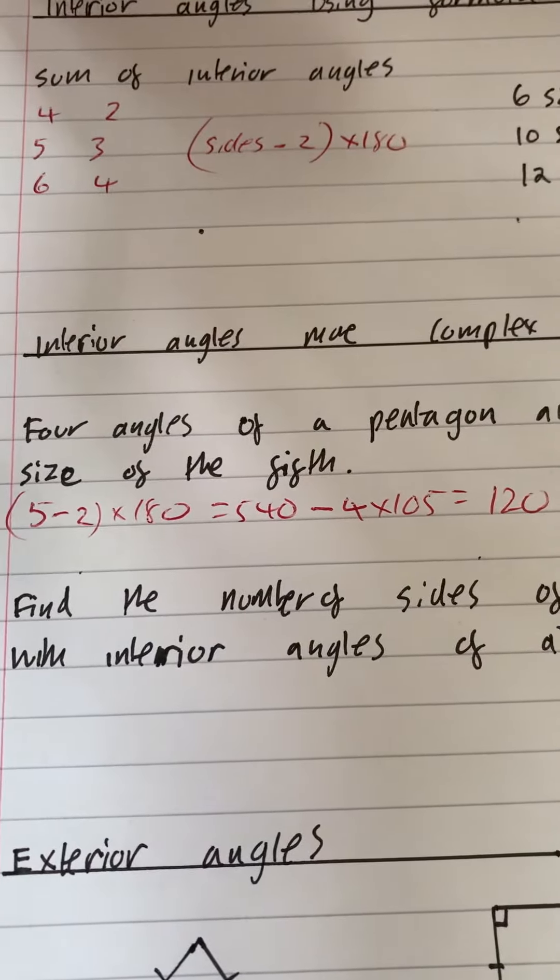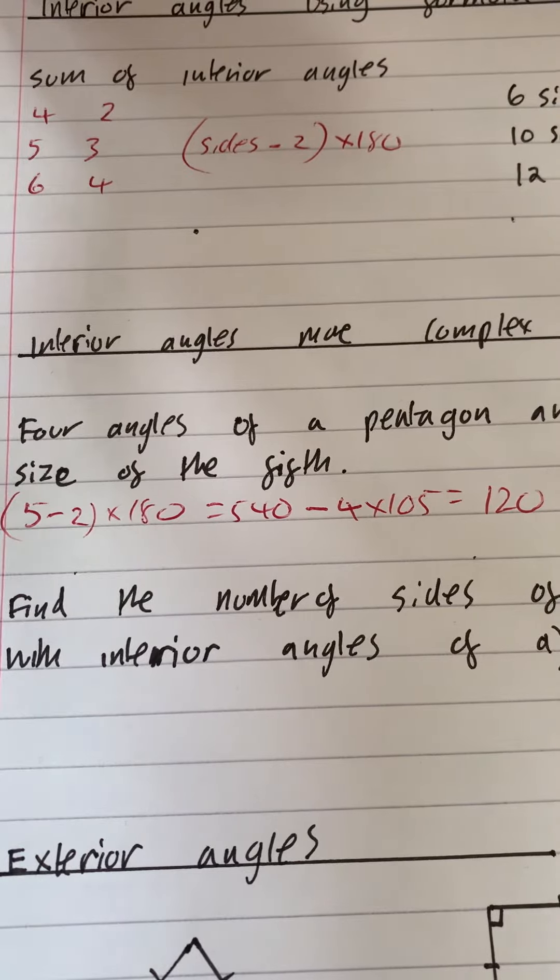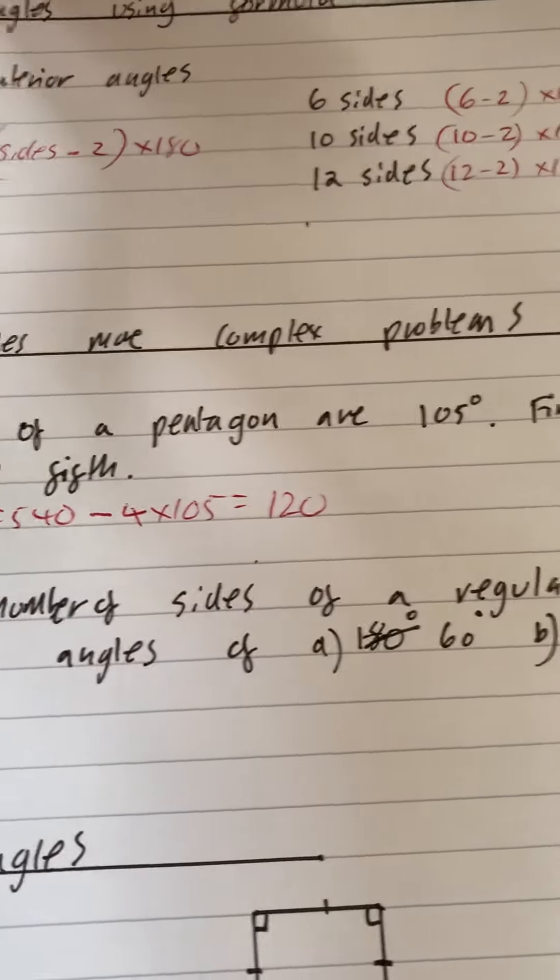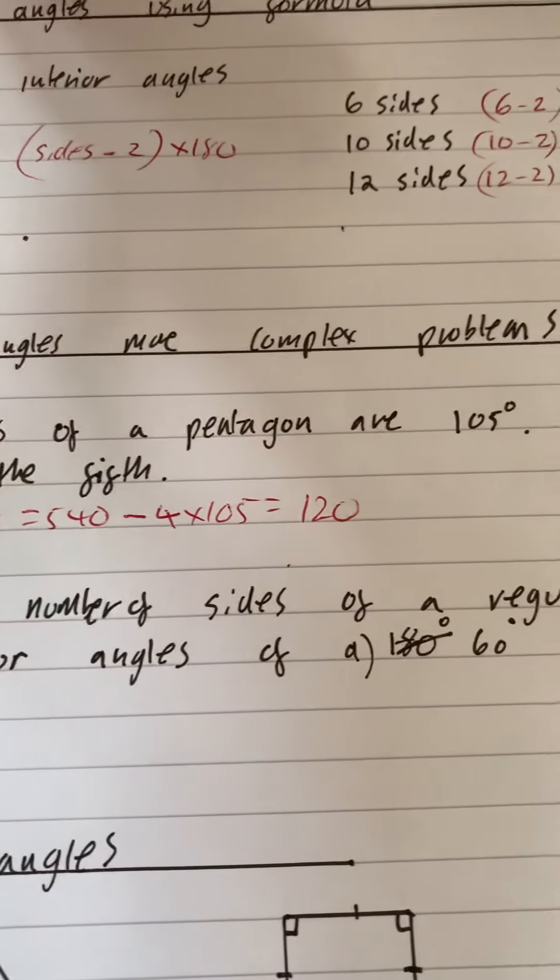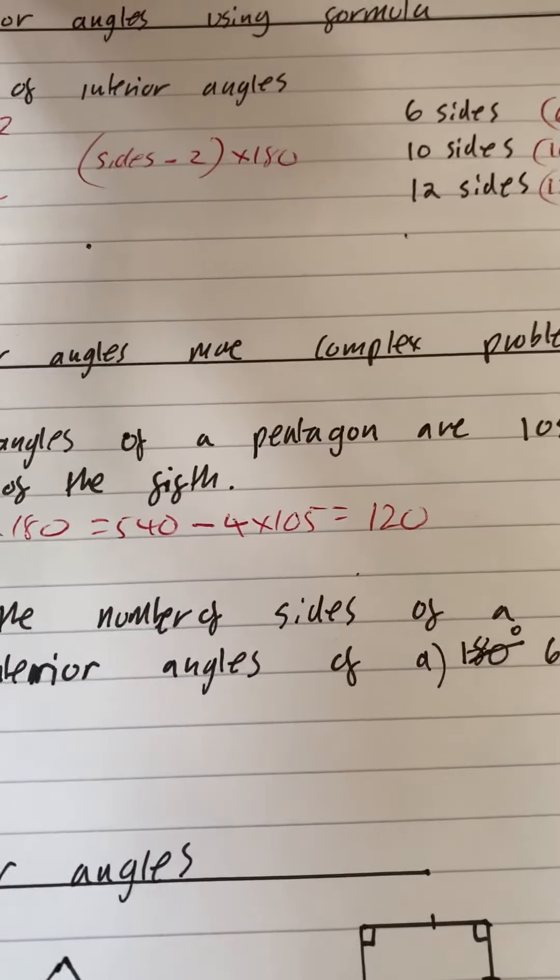Now, the next question, I wouldn't normally solve it this way, but you can do it with interior angles. It says, find the number of sides of a regular polygon with the interior angle of 60.